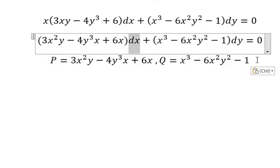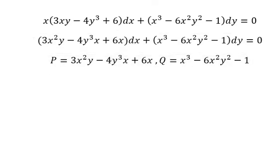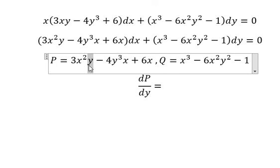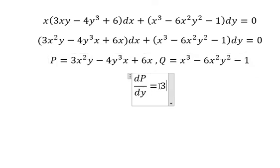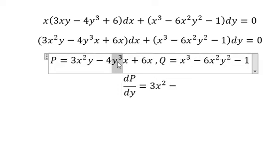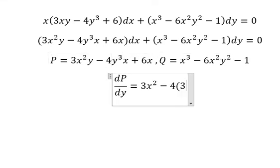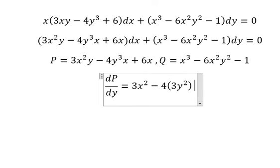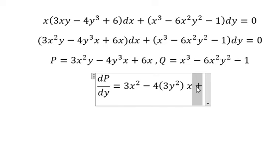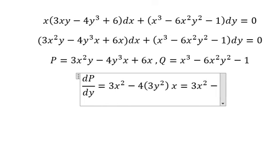Next, we have ds, that means we need to take the derivative of P with respect to y. We have y here, so we get number one. This one we have y to the power of 3 — the derivative of y to the power of 3 — we have 3y squared. This one we don't have y, so we get zero. Negative 4 times 3 gives us negative 12.